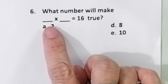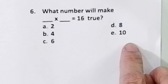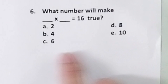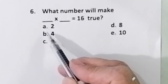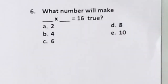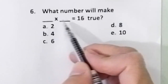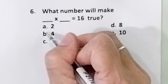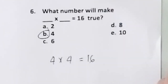What number will make blank times blank equal 16 true? When we teach in the tutorial center, many make a mistake here. Sometimes out of 20 students, only one gets the correct answer because it's kind of tricky. Other students will answer A and D because 2 times 8 is 16. But it says blank times blank — meaning these two numbers must be the same. So the correct answer is letter B. Why? 4 times 4 is 16. Don't be tricked.